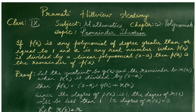then p of x would be equal to x minus a into q of x plus r of x. That is, p of x is the dividend, which is equal to x minus a, the divisor, into the quotient plus the remainder. Since the degree of the divisor x minus a is 1, the degree of r of x, that is the remainder, will be less than 1. That is, degree of r of x is equal to 0.